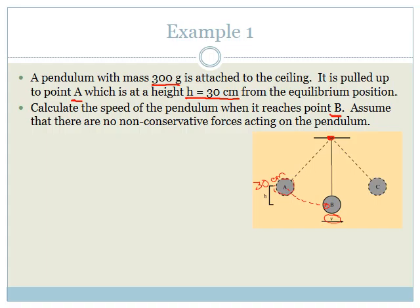Before we carry on, we need to convert our mass and our height, because these are not SI units. The mass has to be in kilograms, so the mass is 0.3 kilograms, because there are 1000 grams in a kilogram. And the height is also going to be 0.3 meters, because there are 100 centimeters in a meter. Please, as you're reading these questions and highlighting the information given, make sure that you convert immediately so you don't make a mistake by doing the whole problem with incorrect units.